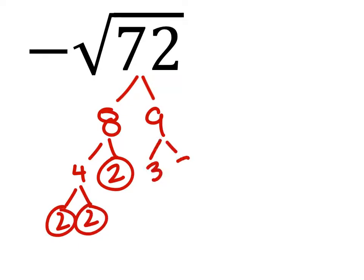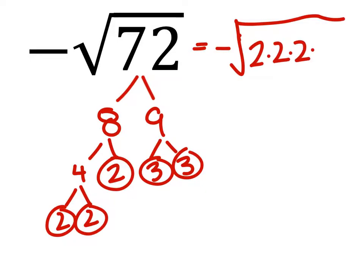9 splits up into 3 and 3, prime numbers. So this is the negative square root of 2 times 2 times 2 times 3 times 3.